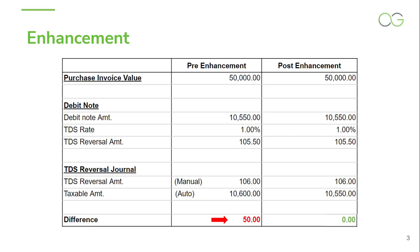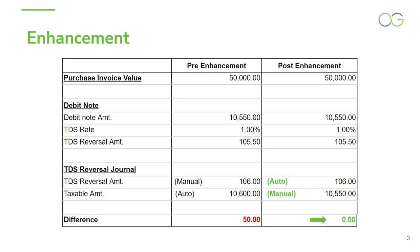Now, let's talk about the post-enhancement part. Nothing has changed in the Purchase Invoice or Debit note. The enhancement is made in the TDS Reversal journal. We will use the same Purchase Invoice and Debit note with the same figures and see what has changed in the TDS Reversal journal. After this enhancement, the user will enter the taxable amount manually and the system will calculate the TDS Reversal amount automatically. Due to this enhancement, the problem faced in the pre-enhancement part is solved and there would be no difference and discrepancy while filing the TDS return.